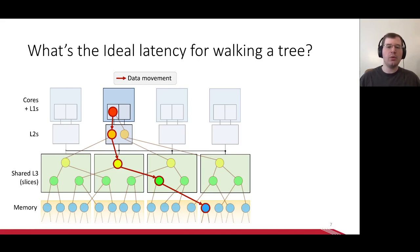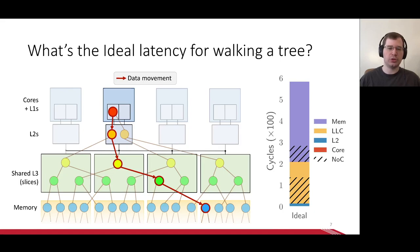So what's the ideal latency? Well, you can't do better than traversing the memory hierarchy accessing each node where it currently resides. To understand this latency a little better, we developed an analytic model based on a 64 core system. We can see the latency broken down into the core, which isn't included in ideal, L2 and LLC cache accesses, and memory, with network latency indicated with shading. Most of the time is spent in the LLC and memory, with a significant fraction in the network. Overall, ideal takes an average of 600 cycles to walk the tree.